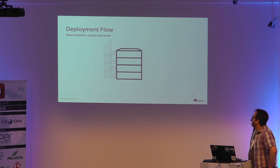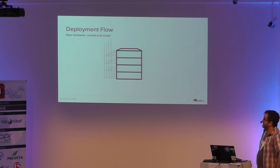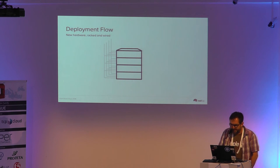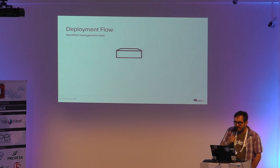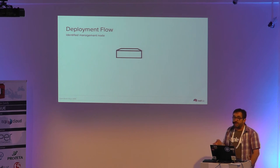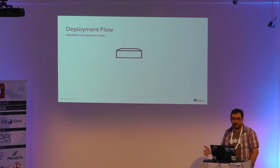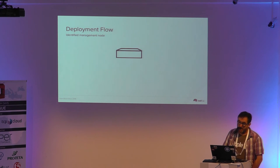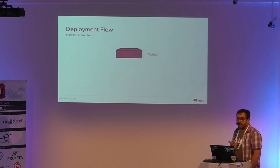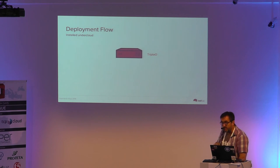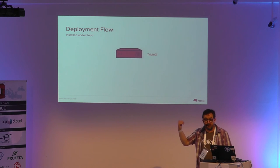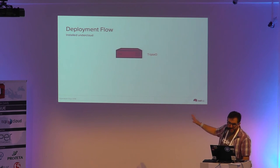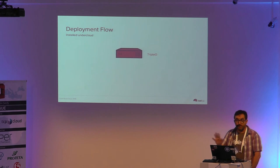In the simplest case, you get yourself some hardware — machines racked up, wired, ready to go. The first thing that needs to happen is to identify which one of the machines is going to be the management node: the installer and operational interface for day-two. That machine is installed with the TripleO software itself, which is a cut-down special-purpose OpenStack instance. Like I said, it's got Nova, it's got Heat, it's got Glance, it's got Ironic, it's got Neutron — one machine ready to treat the other machines as cloud resources.